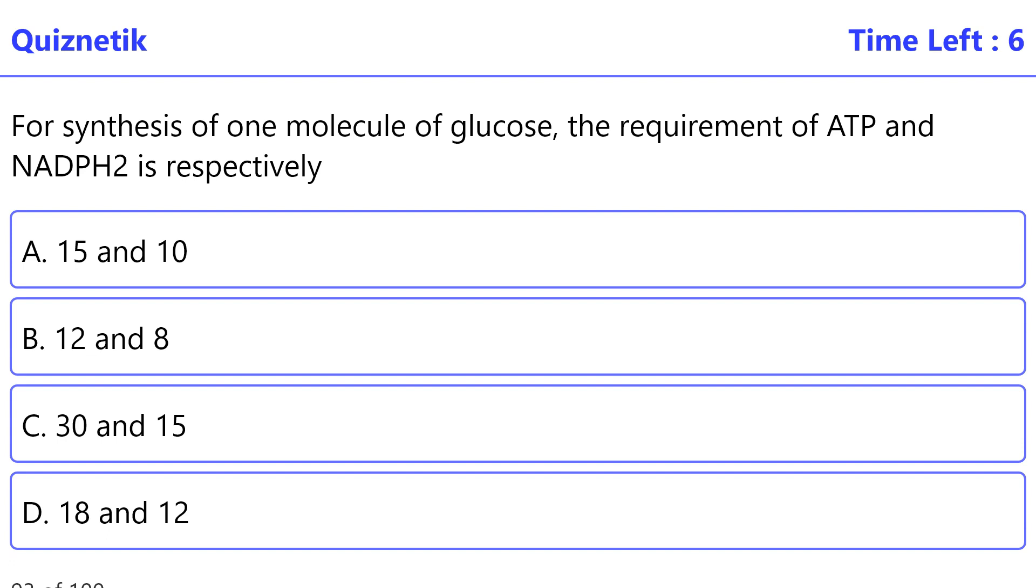For synthesis of one molecule of glucose, the requirement of ATP and NADPH2 is respectively - the correct option is D: 18 and 12.